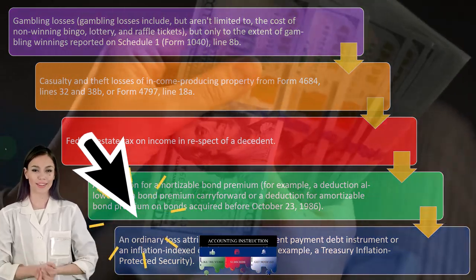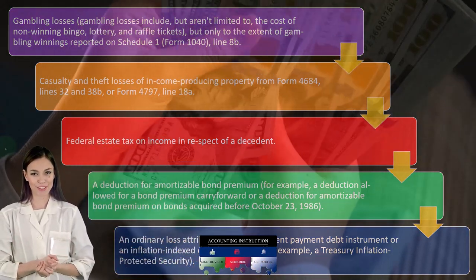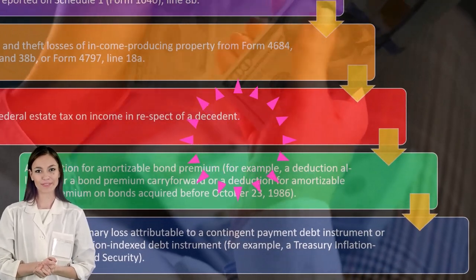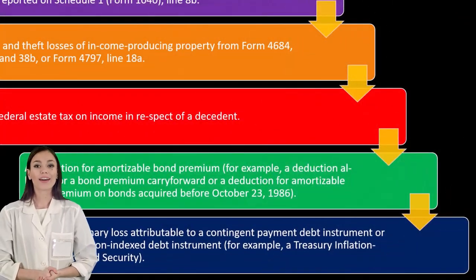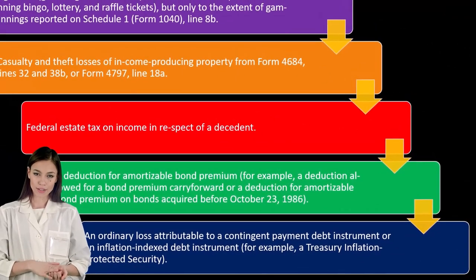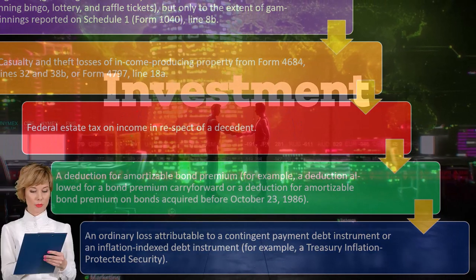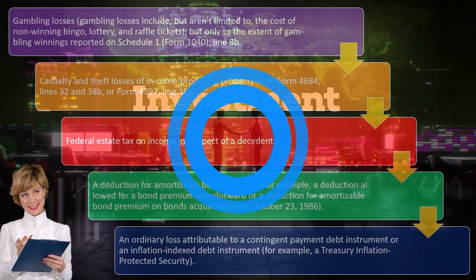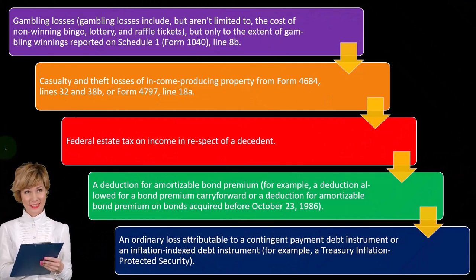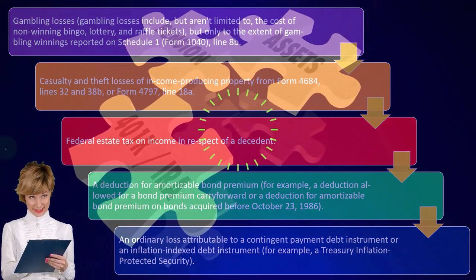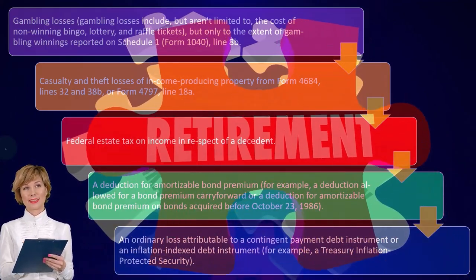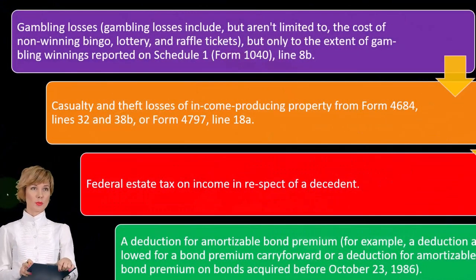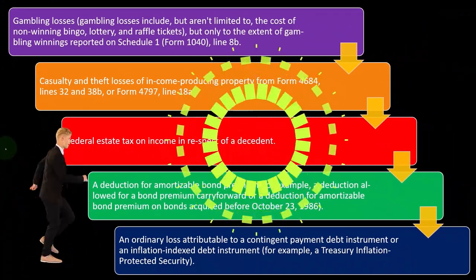An ordinary loss attributable to a contingent payment debt instrument or inflation-indexed debt instrument — for example, a treasury inflation-protected security (TIPS). This is a fairly specific type of investment. Many individual investors invest in bonds and securities through mutual funds, often held within an IRA or 401(k), so this situation may not come up often. We may take a look at a couple of these in the tax software, like the gambling deduction and Form 4684, or the qualified disaster losses.